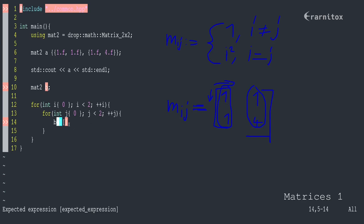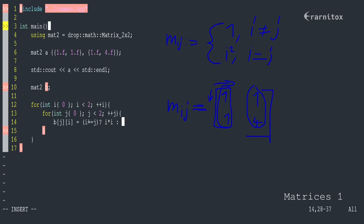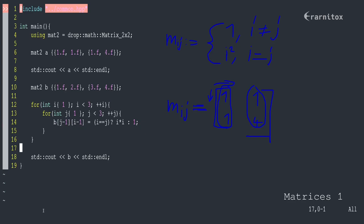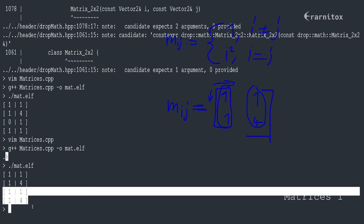Our first index is not the row index but the column index. We assign: if i equals j, then we assign i squared, which is i times i; else i is unequal to j and we assign 1. We can output our second matrix. We make our index start at 1 and go smaller than 3, and add minus one here. Now it should be correct, and we've produced the same matrix.